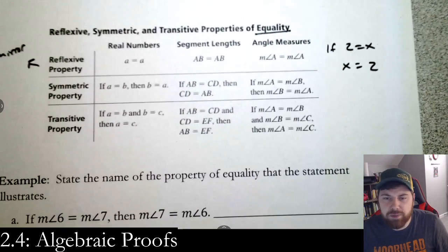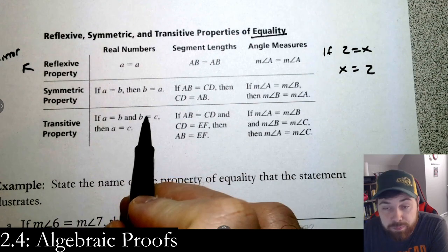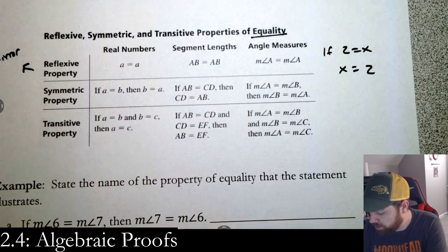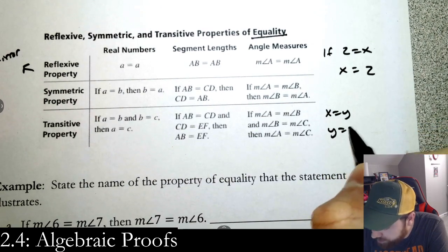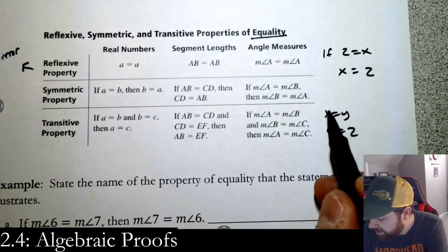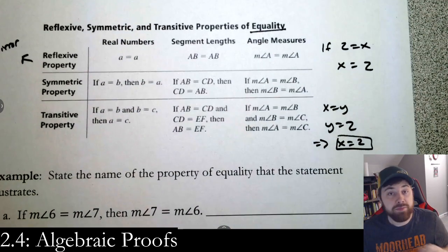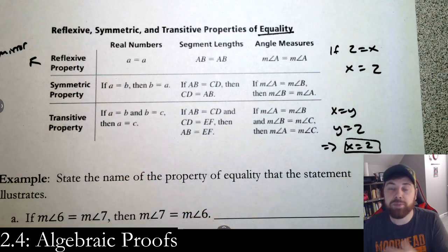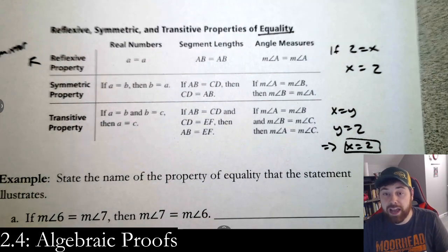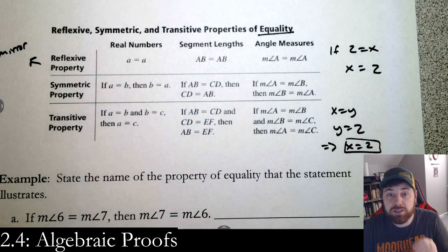The last one is the transitive property — kind of like the law of syllogism. If a equals b and b equals c, then a equals c. So if x equals y and y equals 2, then x equals 2. Just like the law of syllogism, but here it's for equality. The transitive property. When you get to college, you'll learn that these three properties together build a really nice mathematical structure.